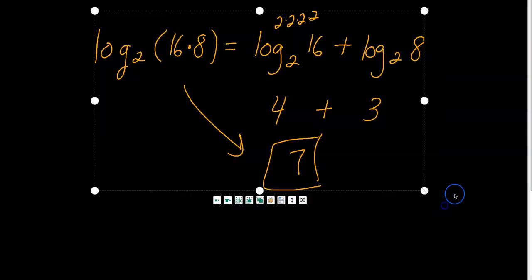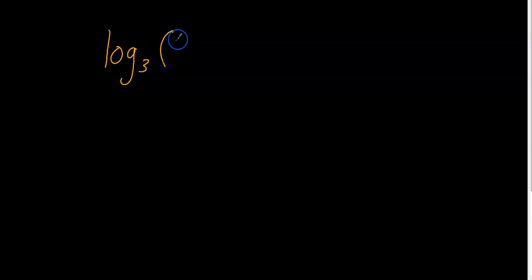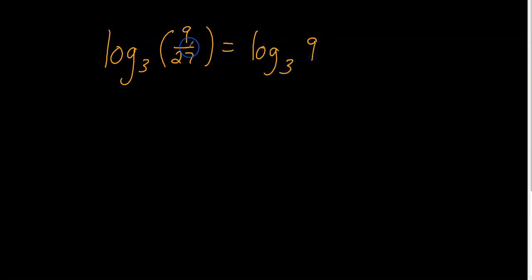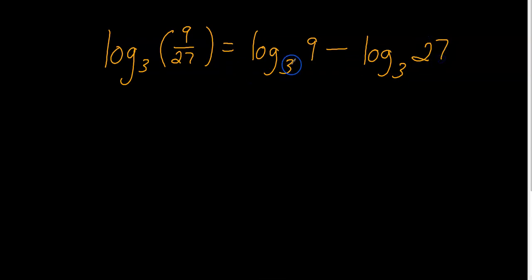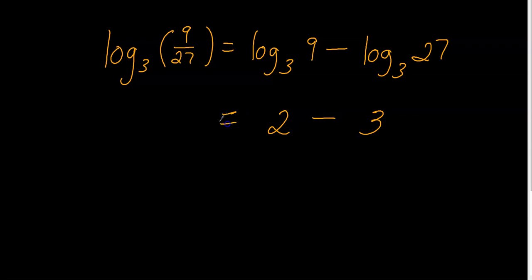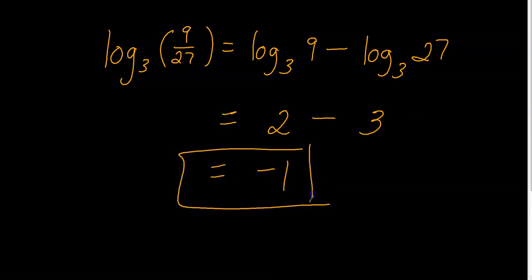How about log base 3 of 9 divided by 27? We have a single logarithm and we'll write it as two logarithms. I write log base 3 of 9, and remember division turns into subtraction, then minus log base 3 of 27. Log base 3 of 9 is 2, because you multiply 3 by itself two times to get 9. Log base 3 of 27 is 3, because 3 times 3 times 3 is 27. So 2 minus 3 equals negative 1, and that's the answer.